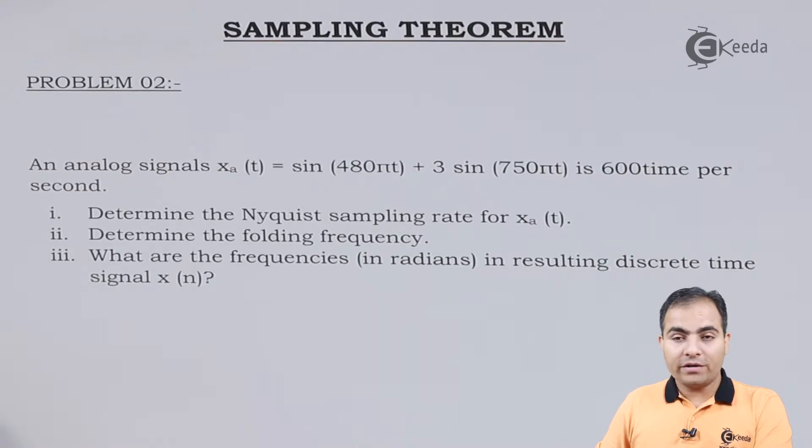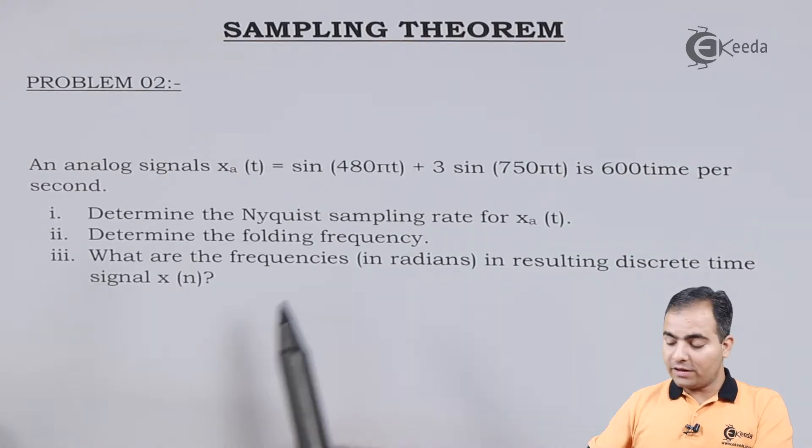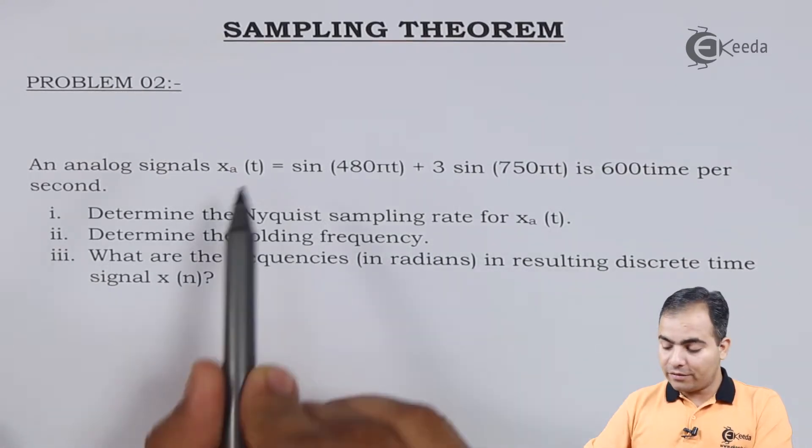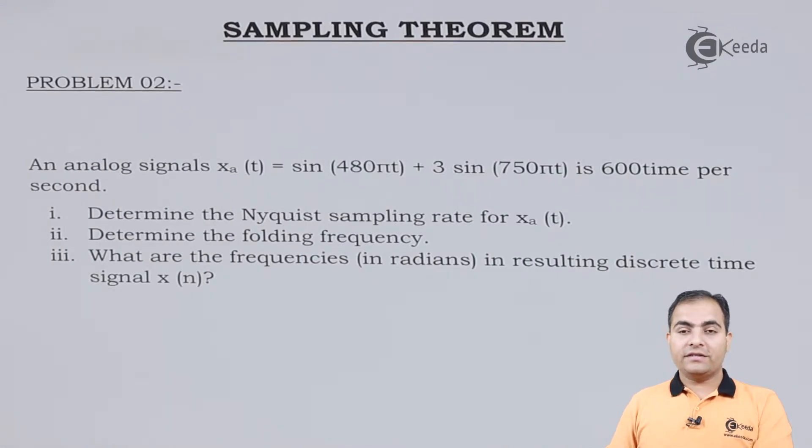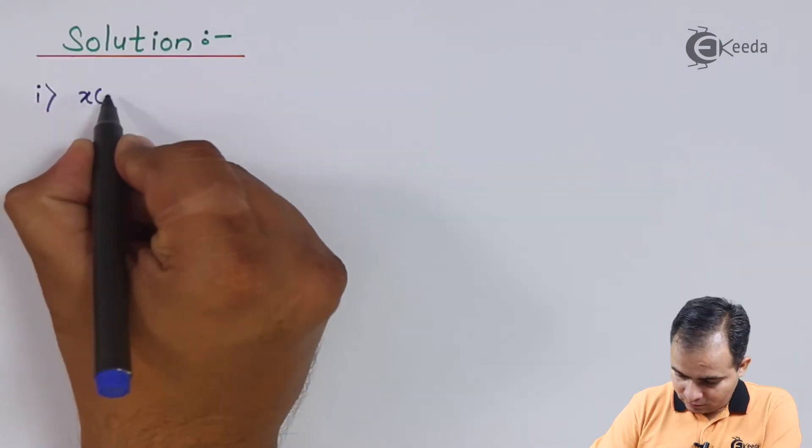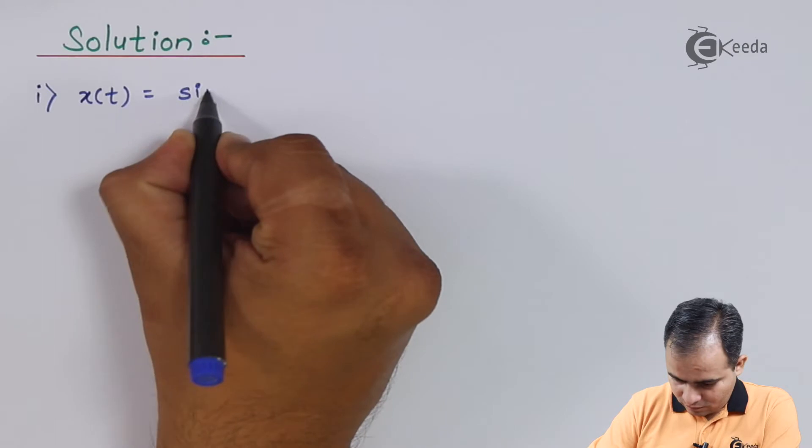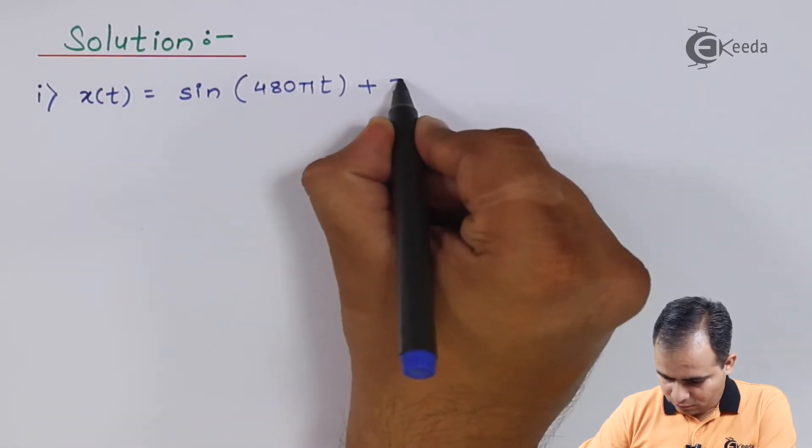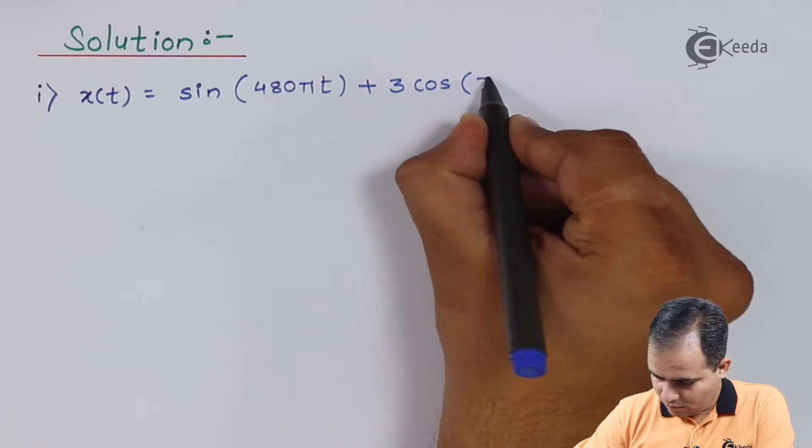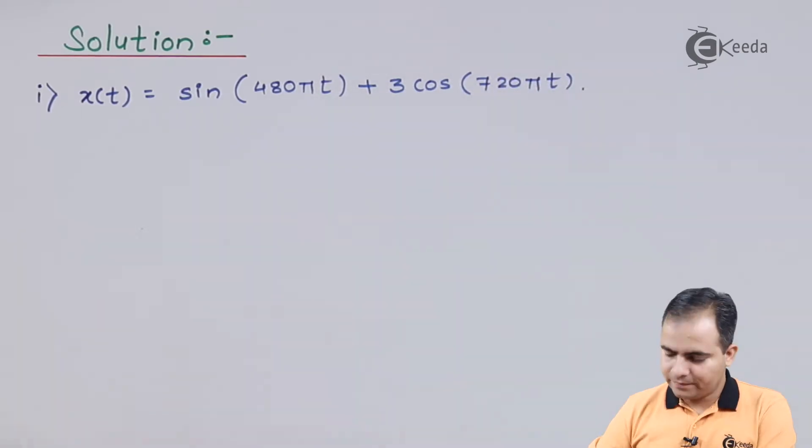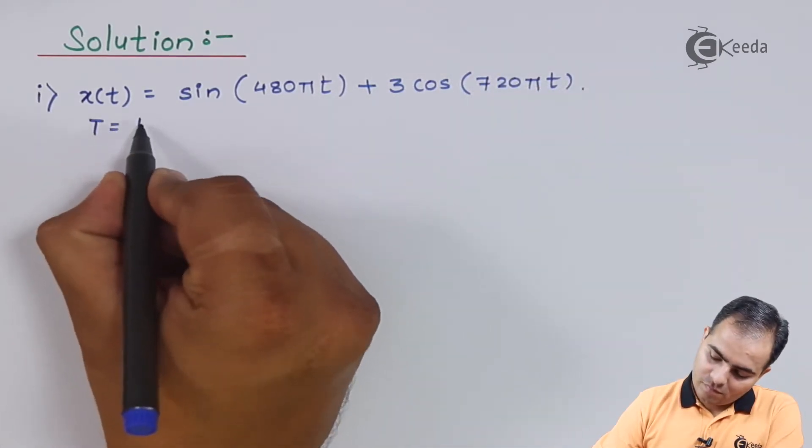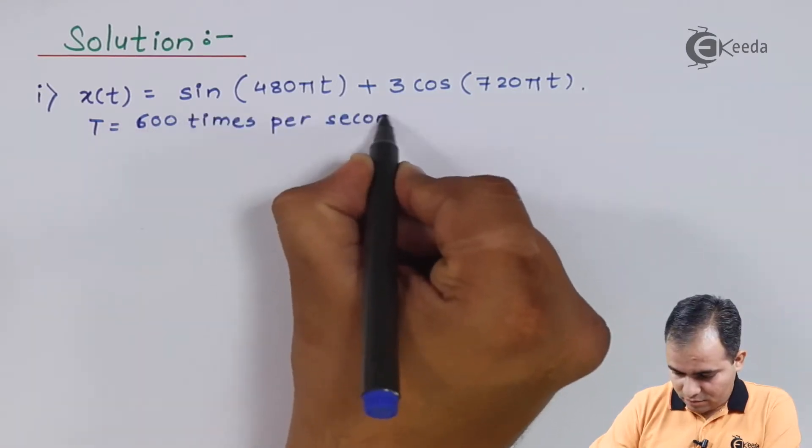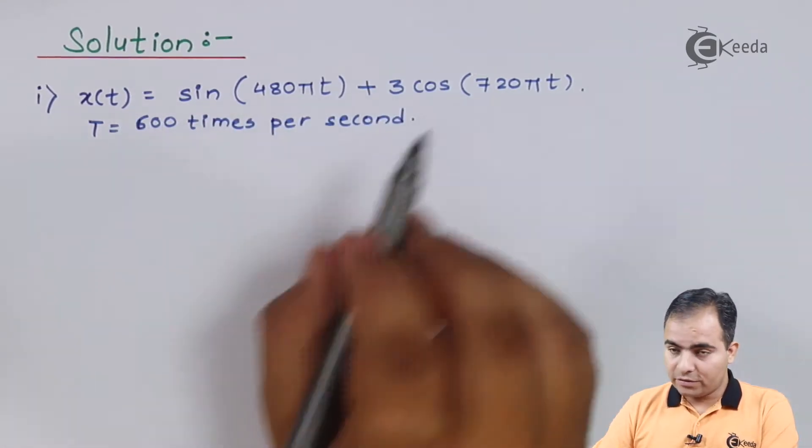We will solve each and every part of this question one by one. First, we'll calculate the Nyquist sampling rate for xa(t). Let's see the solution.